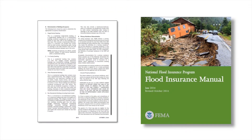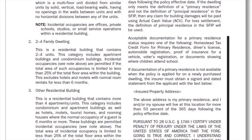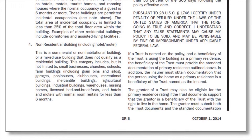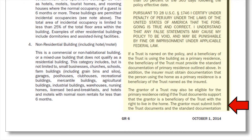Some of you might ask: when I look at the manual, how can I tell what has changed? Let's take a closer look at page 6 in the General Rules section. The pages where revisions have taken place have footers with the October 1st, 2014 effective date. Also, you'll see a little black bar on the side of the page. That bar tells you that the verbiage next to it has changed from the previous manual. The solid change bars identify all updated information.